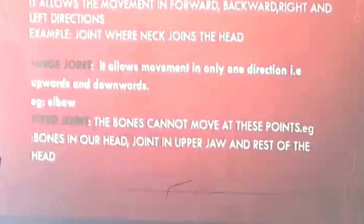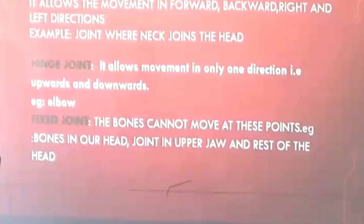Another joint is the pivotal joint. In a pivotal joint, a cylindrical bone rotates in a ring. It allows movement in forward, backward, right, and left directions. We have a pivotal joint in our neck, where the neck joins the head.